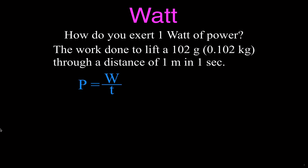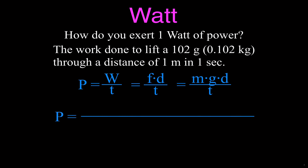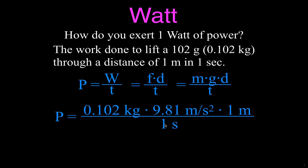Here's how we show that mathematically. The equation for power is work divided by time. Since work equals force times distance, and the force here is due to gravity: P = m × g × d ÷ t. Taking 102 grams converted to 0.102 kilograms, times 9.81 meters per second squared, times a distance of one meter, divided by one second — doing all that math gives you one Watt of power.